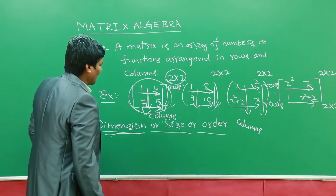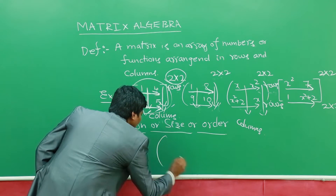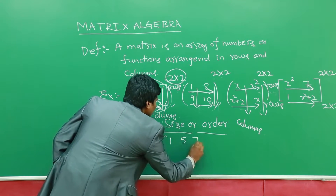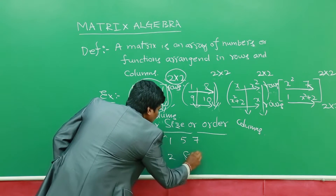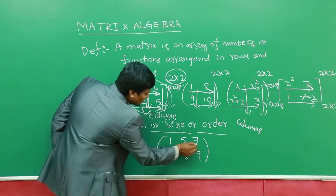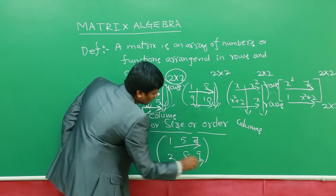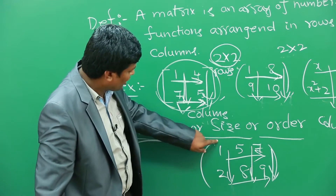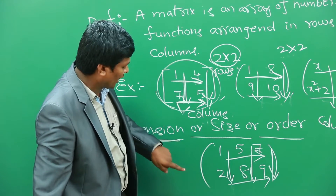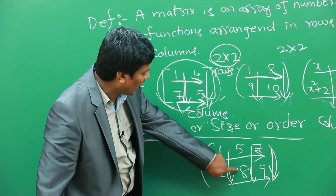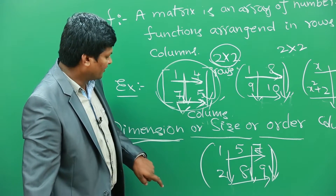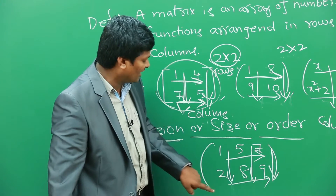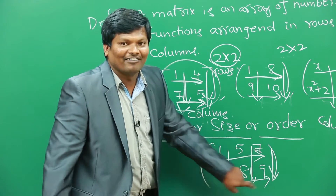Suppose if you take this matrix — 1, 5, 7, 2, 8, and 9 — this matrix has two rows but three columns. The first row is 1, 5, 7 and the second row is 2, 8, 9. The first column is 1, 2; the second column is 5, 8; and the third column is 7, 9.